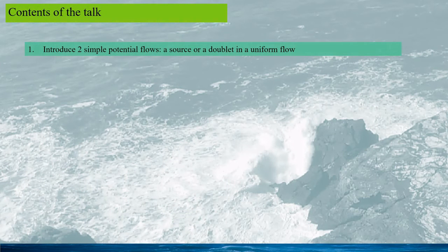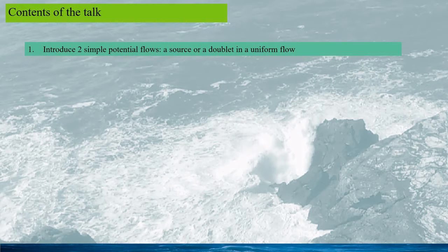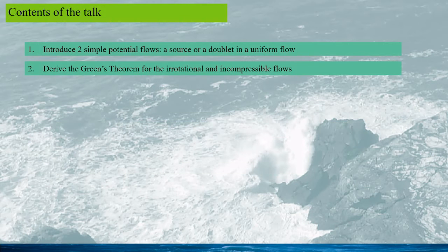In this talk, I will introduce two simple potential flows — a source and a doublet in a uniform flow — to show how simple structures can be represented using a simple source or doublet. Then I will derive the Green's theorem for irrotational and incompressible flows, which is the fundamental equation for the boundary element method.